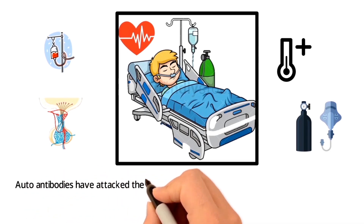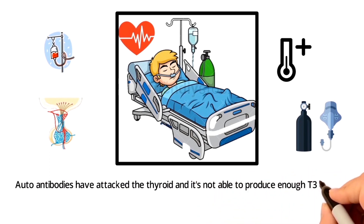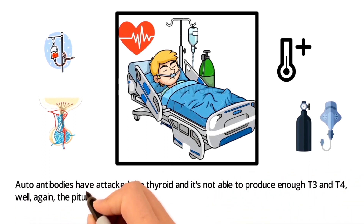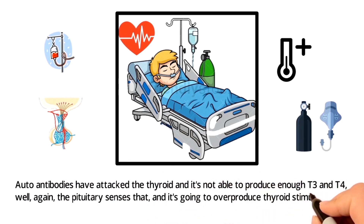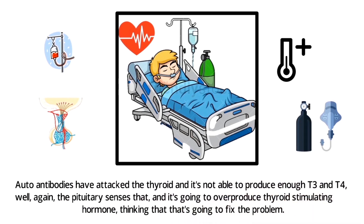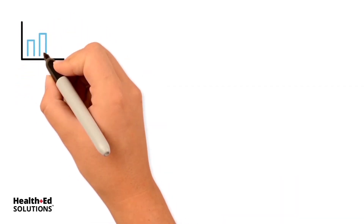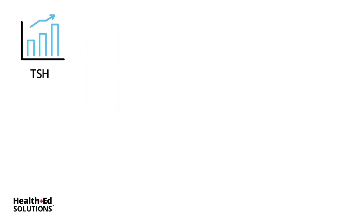With our labs in hypothyroidism, you will see decreased T3 and T4 because the auto-antibodies have attacked the thyroid and it's not able to produce enough T3 and T4. The pituitary senses that and will overproduce thyroid stimulating hormone thinking that will fix the problem, so you will see an increase in TSH.